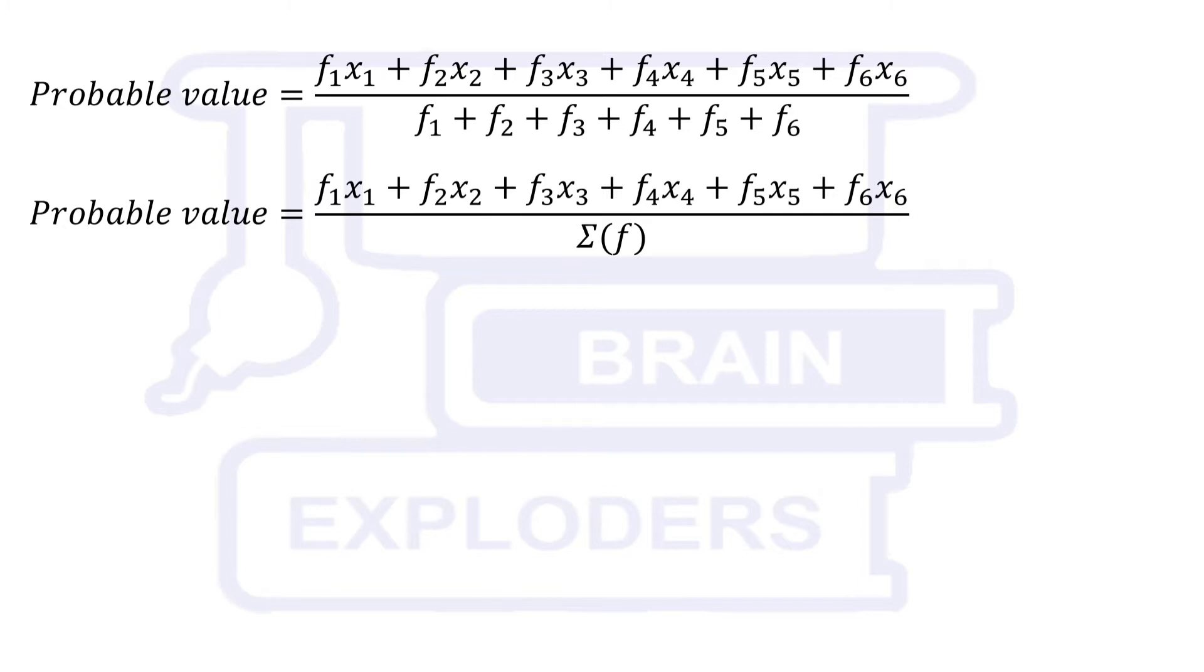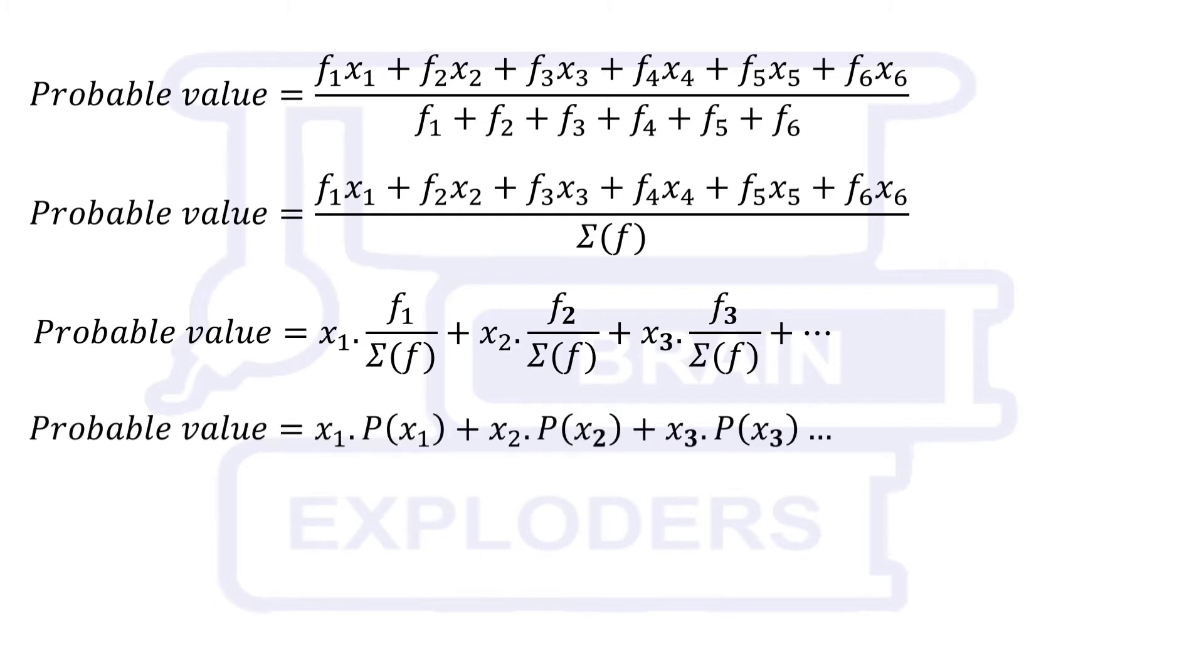In this data set, f1 is the frequency of x1 which means it is the favorable outcome of x1 and sigma f is the total number of outcomes. This means f1 over sigma f is the probability of event x1. Similarly, f2 over sigma f is the probability of event x2.